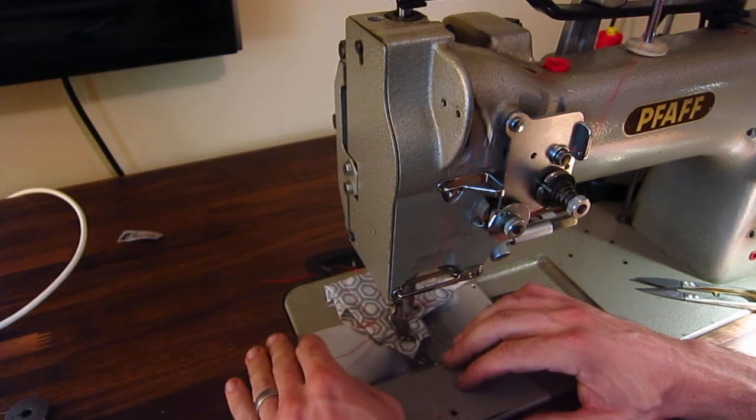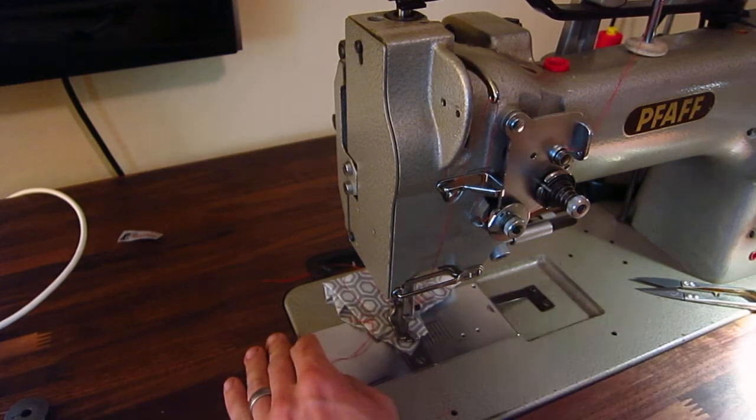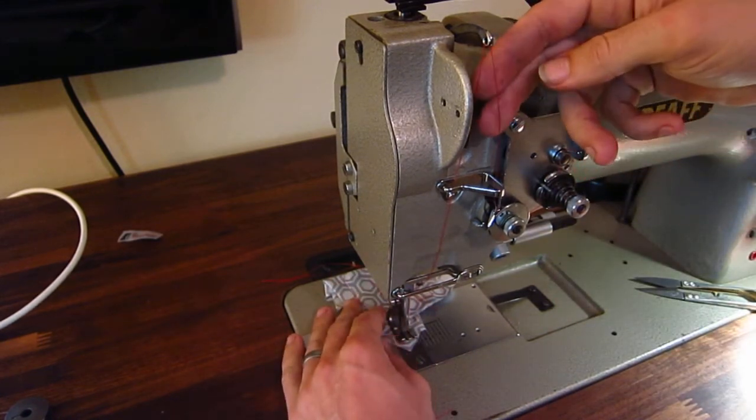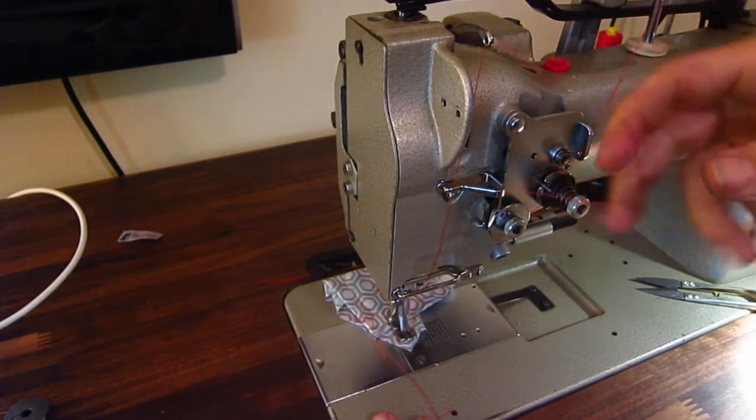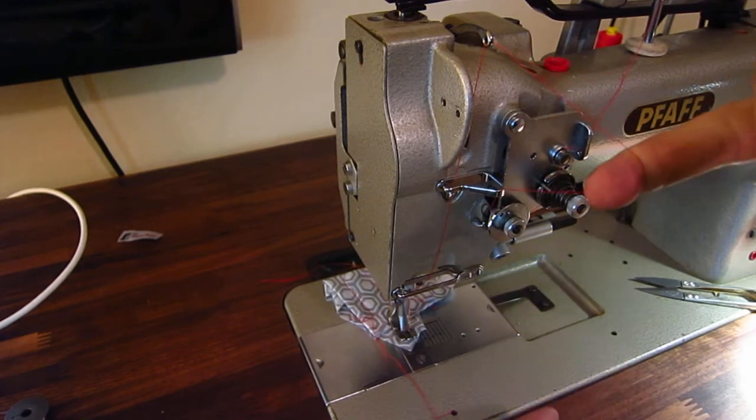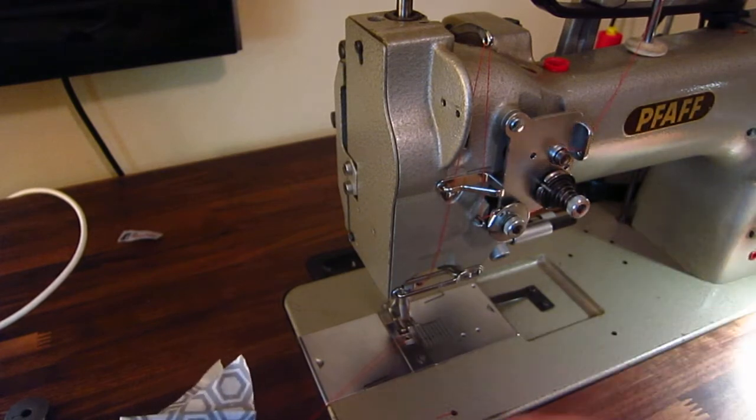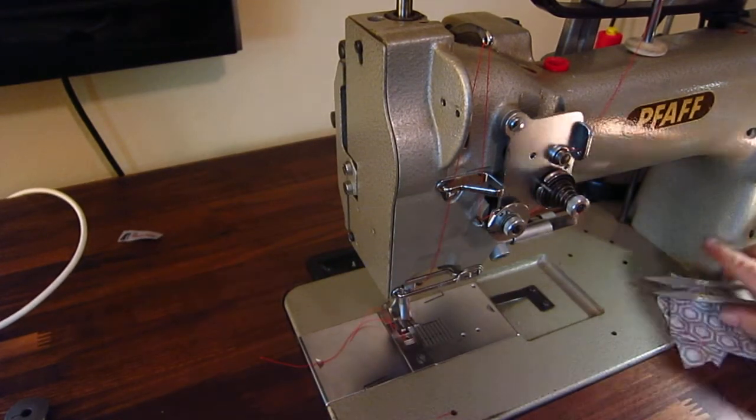Start sewing. Get to the end of the run. Raise the take up lever all the way to the top. Grab the thread to the right of the take up lever. Pull it just a little bit so you have some slack there. And then pull it out. Pull the piece out and cut it.